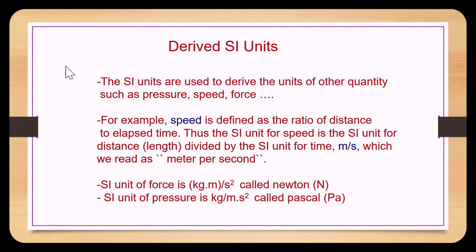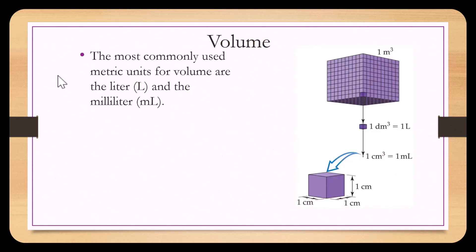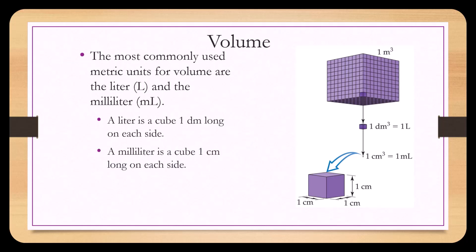The most commonly used metric units for volume are the liter and the milliliter. A liter is a cube one decimeter long on each side. A milliliter is a cube one centimeter long on each side. One cubic centimeter is exactly one milliliter, and one cubic decimeter is exactly one liter.